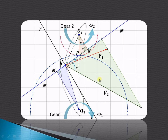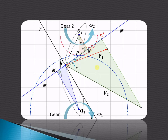Velocities V1 and V2 will each have components along the common normal N'N'. Considering point K and point K', velocity V1 will have a component along the normal equal to V1 cos alpha. Similarly, V2 will also have a component along the normal equal to V2 cos beta.